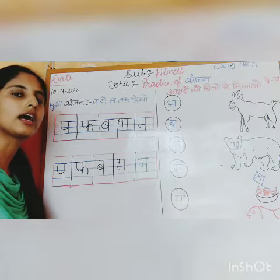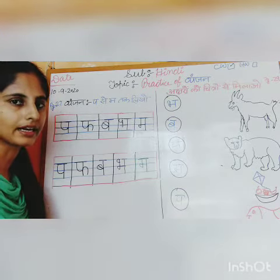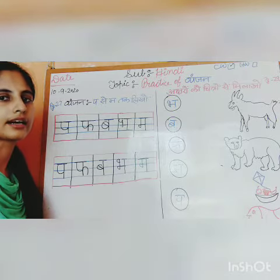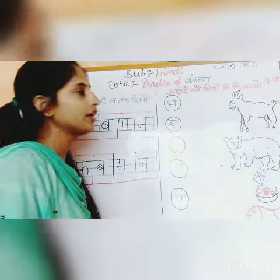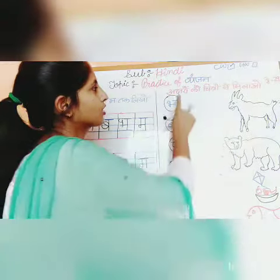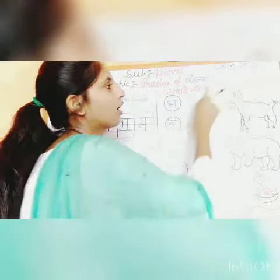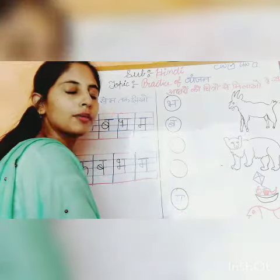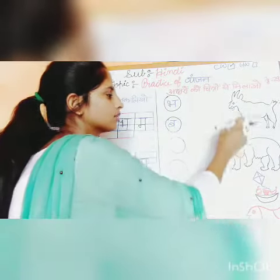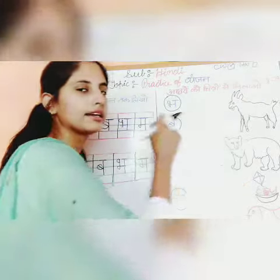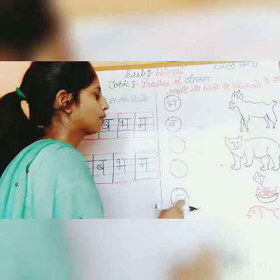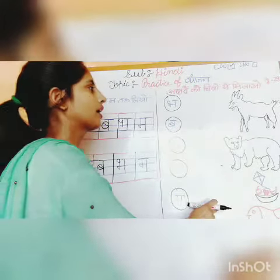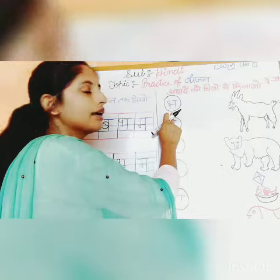On page number 27 and 28. Now I will open page number 29. We have 'aksharov ko chitrho se milao' on page number 29. On one side the akshar is written and on the other side a relative picture is drawn. You have to look at the akshar and match it to its picture. So see, what is the first one?